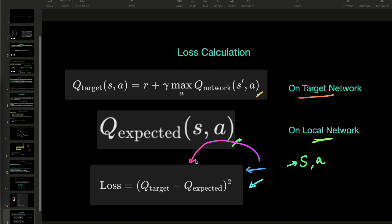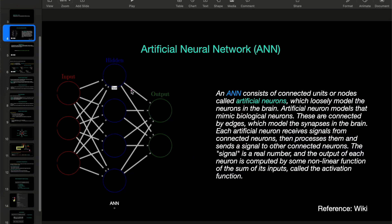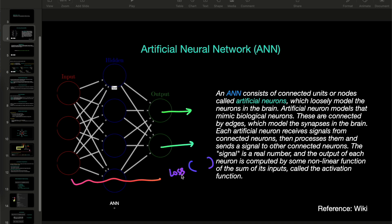We back propagate this loss to the network, and the network will adjust its weights and biases accordingly. In the output, we have the expected Q values from the local network and target Q values from the target network. We compute the loss and back propagate it so the network adjusts weights and biases to minimize the loss.